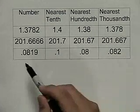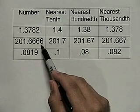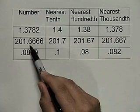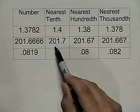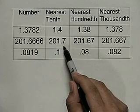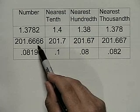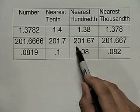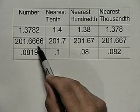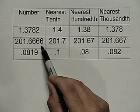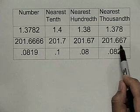Following the same process for 201.6666: rounding to the nearest tenth, the value in the tenths spot is a 6 and the number to the right is also a 6, so we round up to 201.7. For the nearest hundredth, we again have a 6 in the hundredths spot with a 6 to the right, so we round up to 201.67. For the nearest thousandth, 6 is in the thousandths position and the digit to the right is 6, which is greater than 5, so we round up to 201.667.